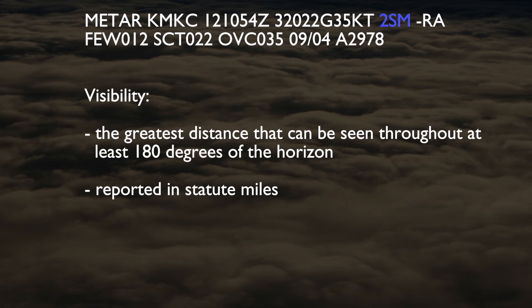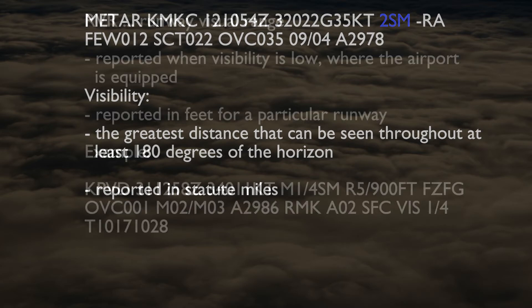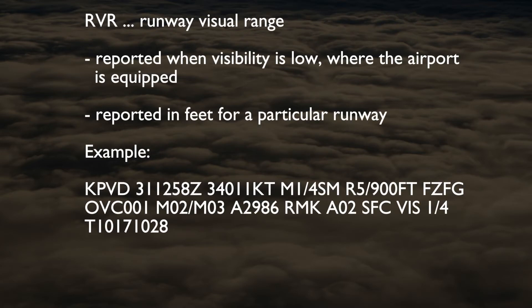Visibility is the greatest distance that can be seen throughout at least 180 degrees of the horizon and is reported in statute miles. The example visibility is 2 statute miles. At times of low visibility where the airport is equipped, runway visual range or RVR will be reported in addition, in feet for a particular runway. For example, R5/900 feet would indicate the RVR on runway 5 is only 900 feet. An M prior to the visibility indicates less than; for example, M 1/4 SM would indicate visibility is less than one quarter statute mile.